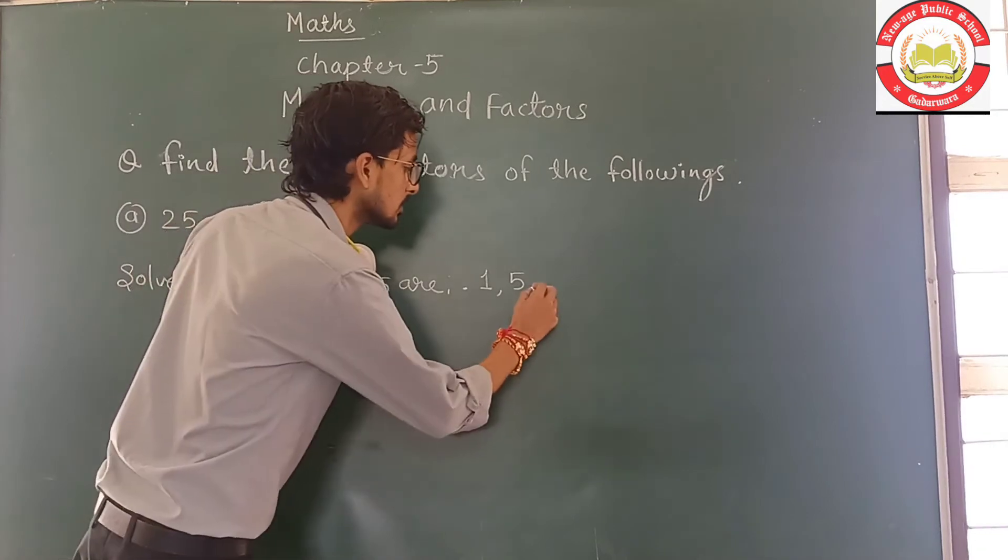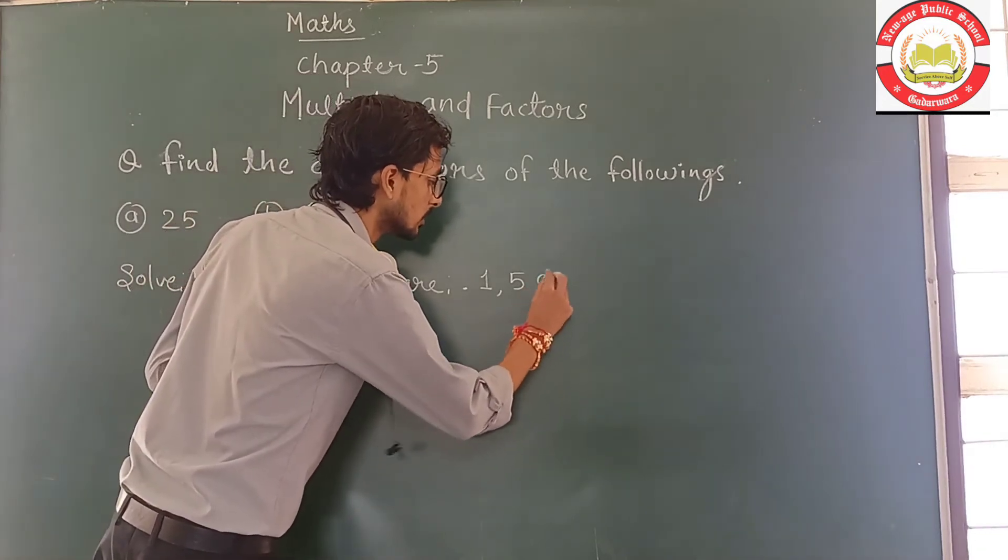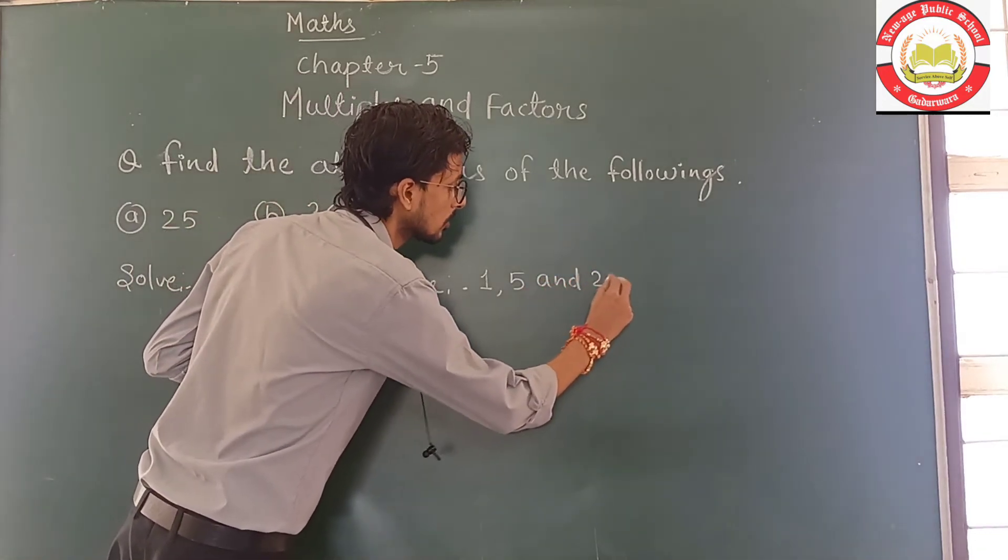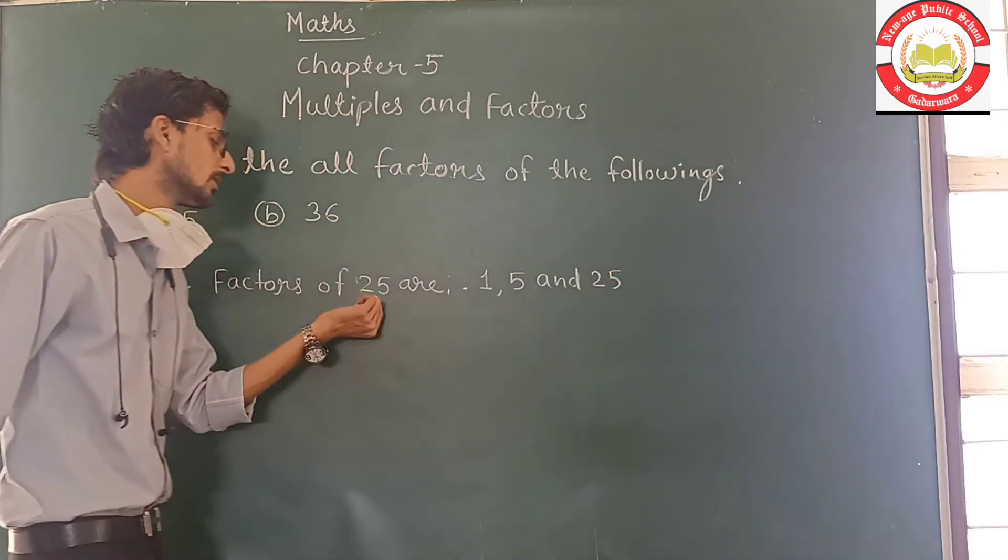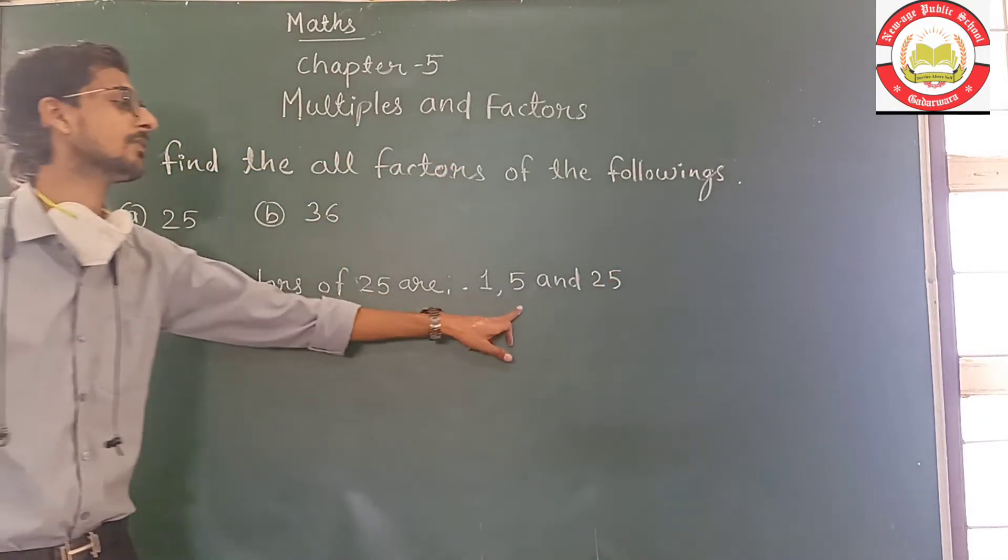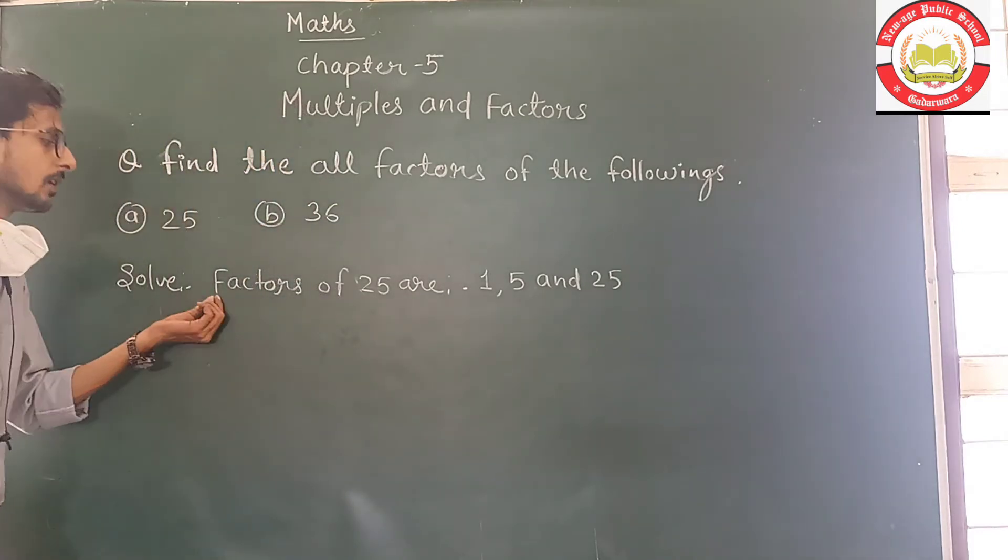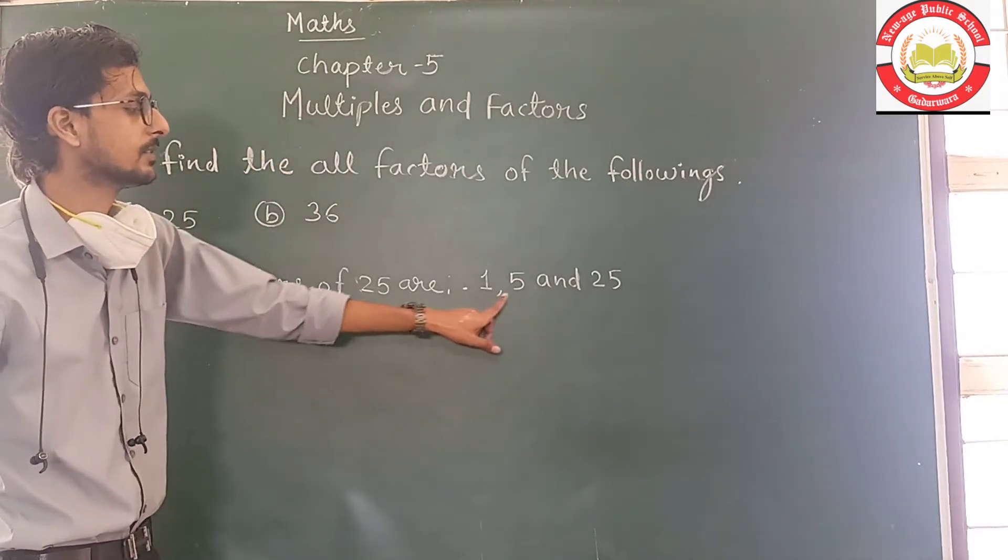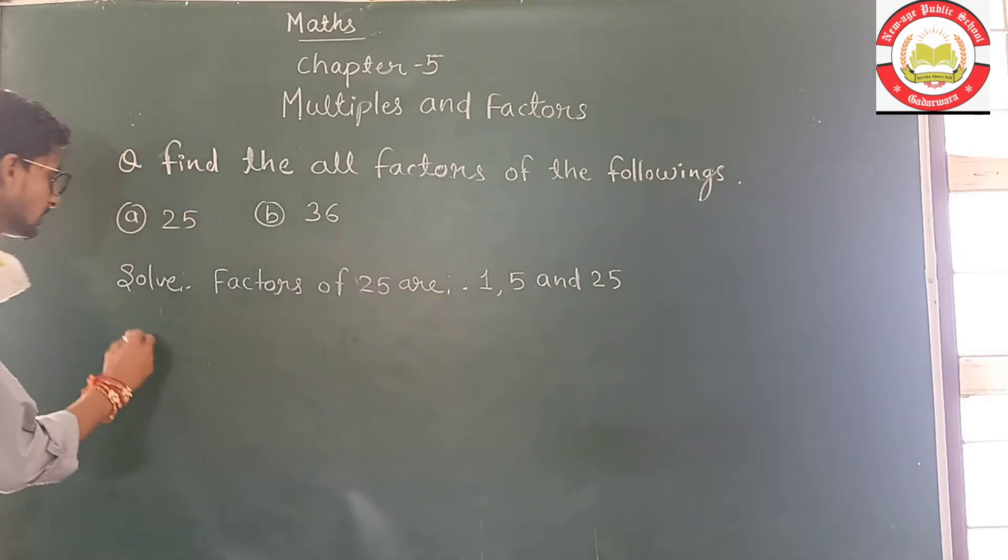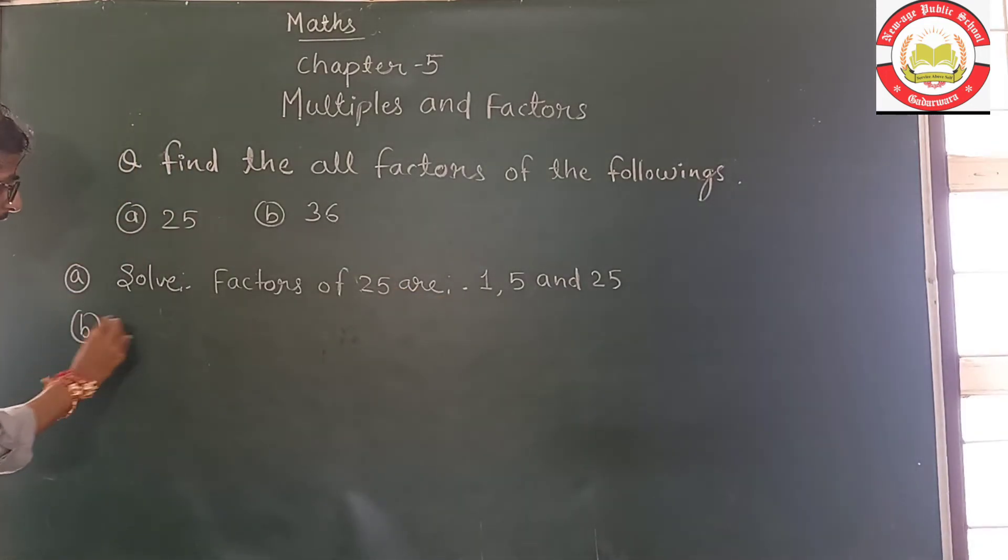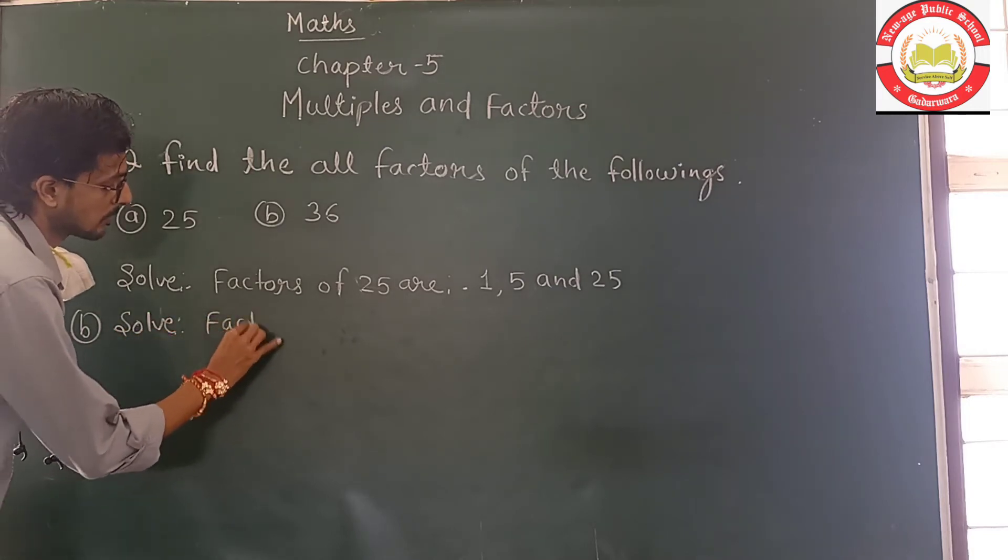Now, the next one is 25. So these are all factors of 25. 25 is divisible by 1, 5, and 25. So all factors of 25 are 1, 5, and 25. Now similarly, the next question will be solved.